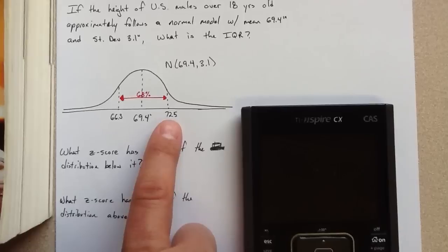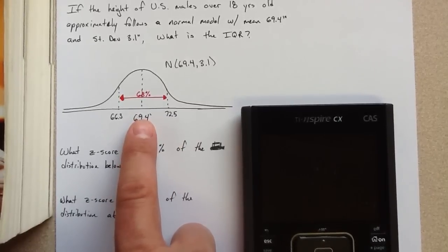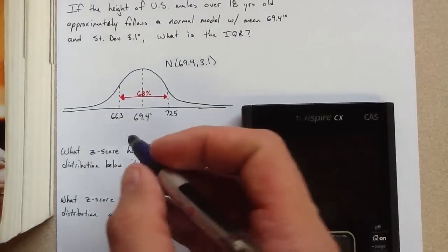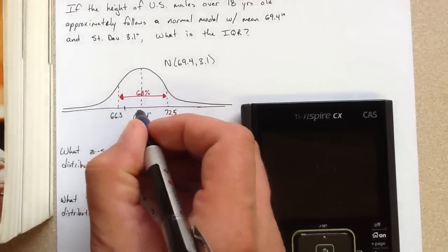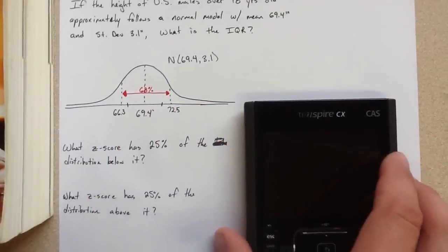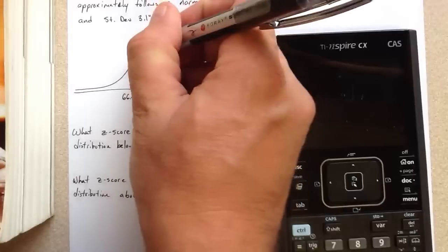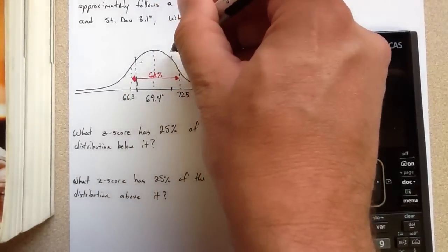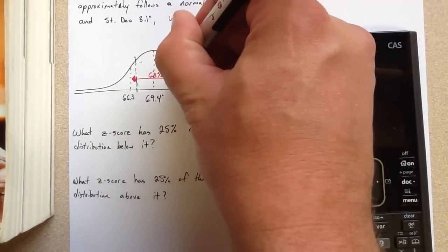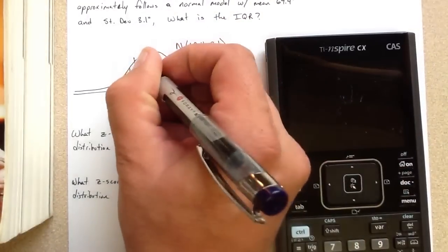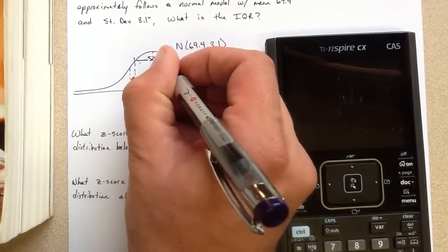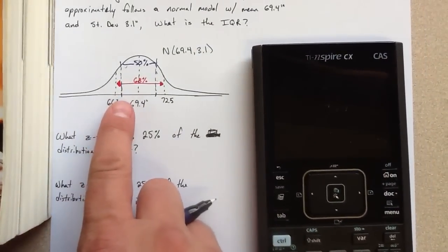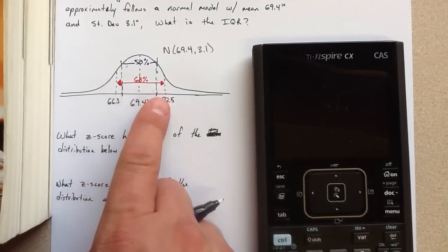If we're looking for the IQR, we're not looking for the middle 68%, we're looking for the middle 50%. So I would think that we'd be looking for something somewhat around here. So cut off just a little bit of that middle 68 to get the middle 50%. The question is, what is this height, and what's that height?